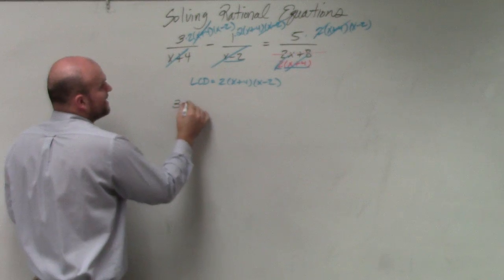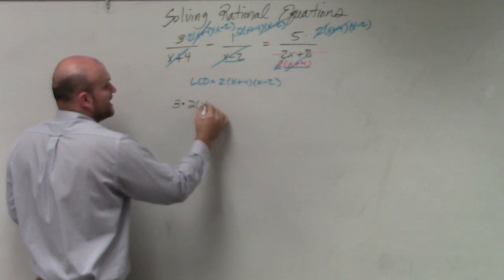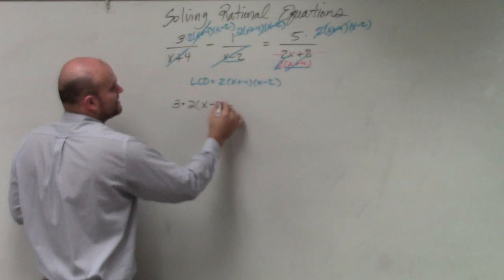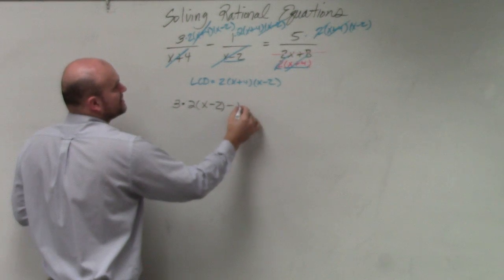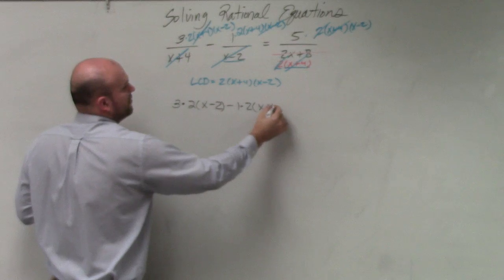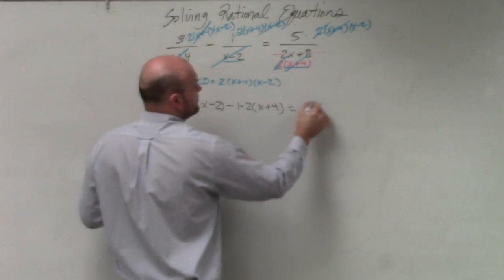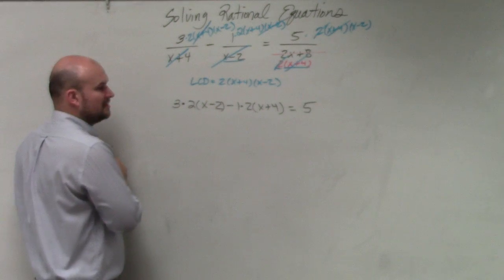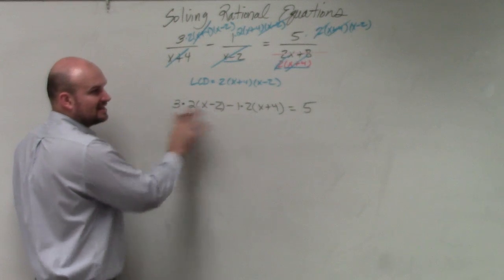So therefore, I'm left with 3 times 2 times x minus 2 minus 1 times 2 times x plus 4 equals 5. Now we can just apply, or I can simplify this.